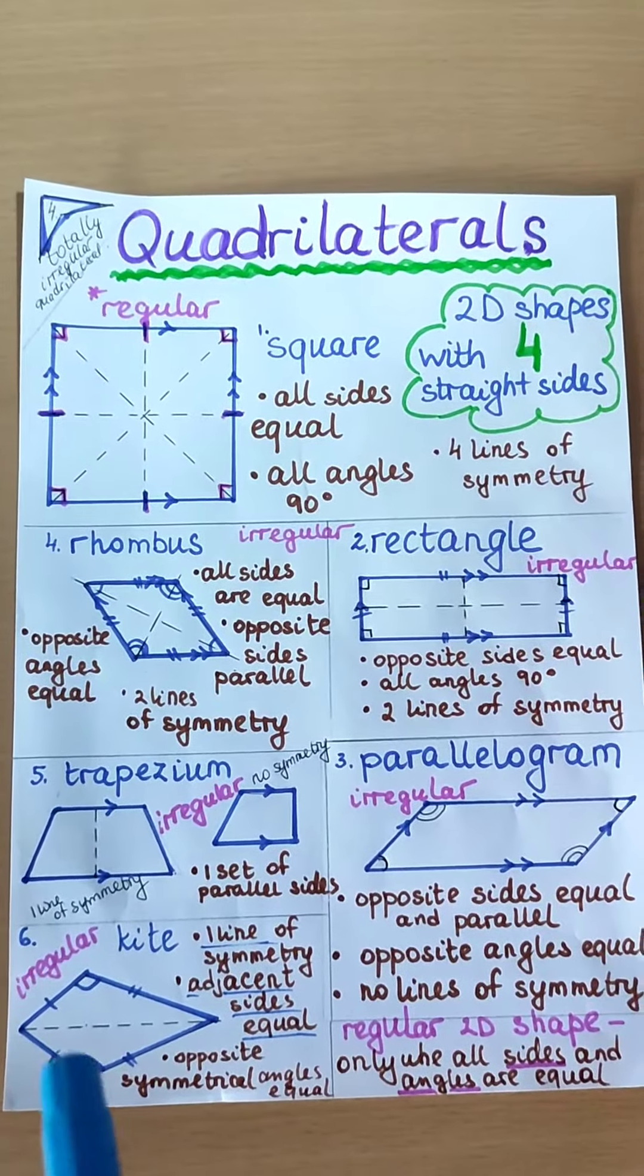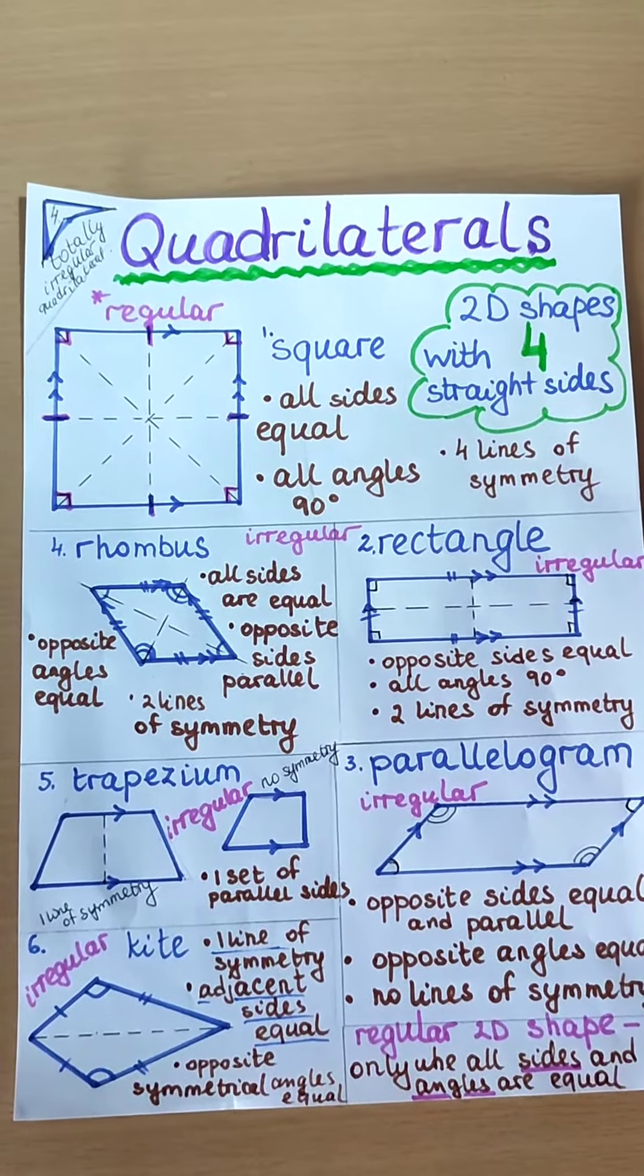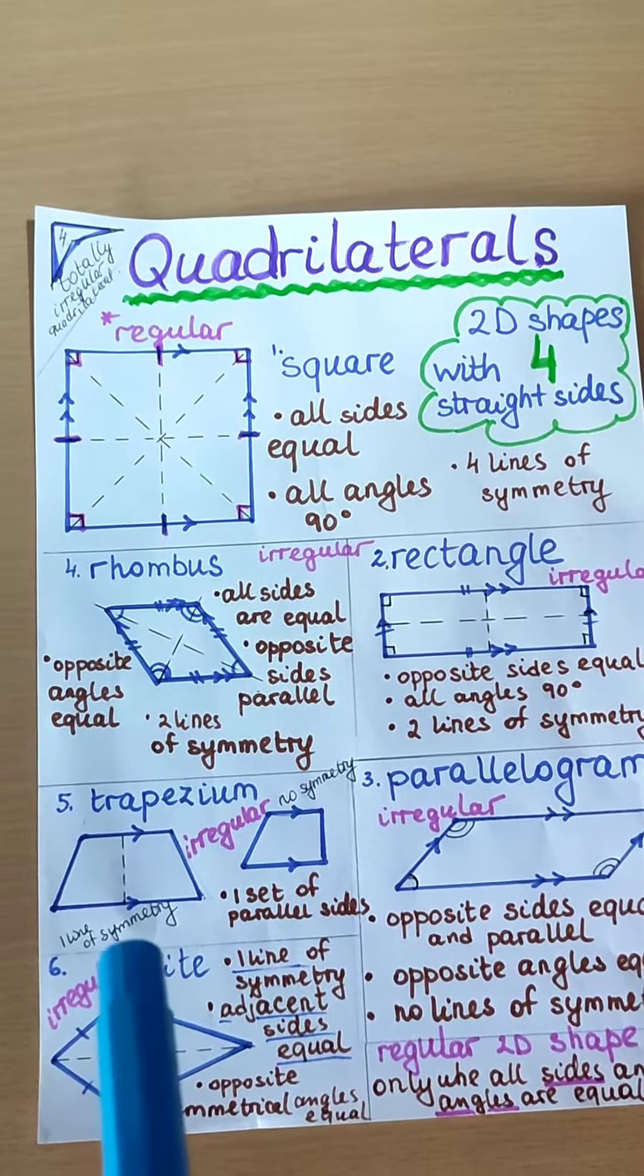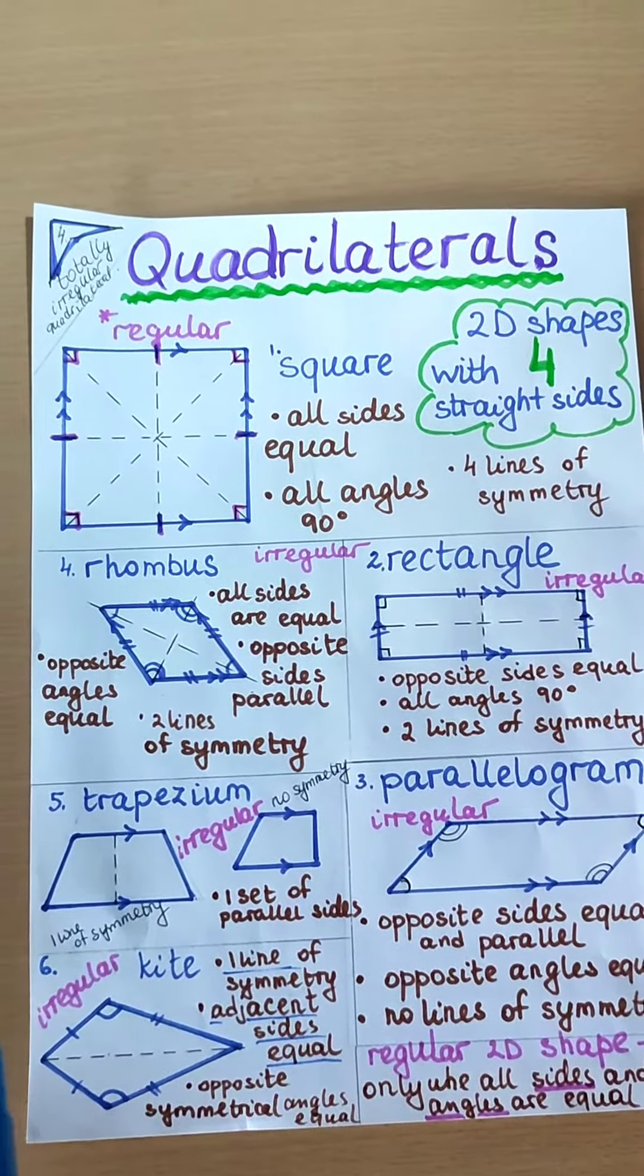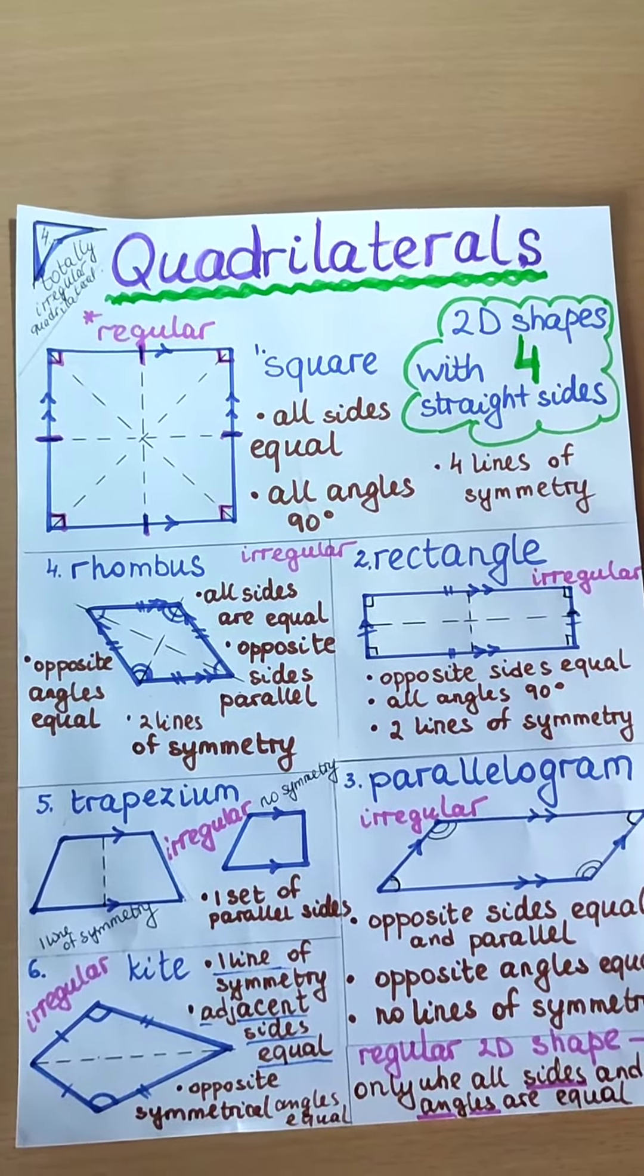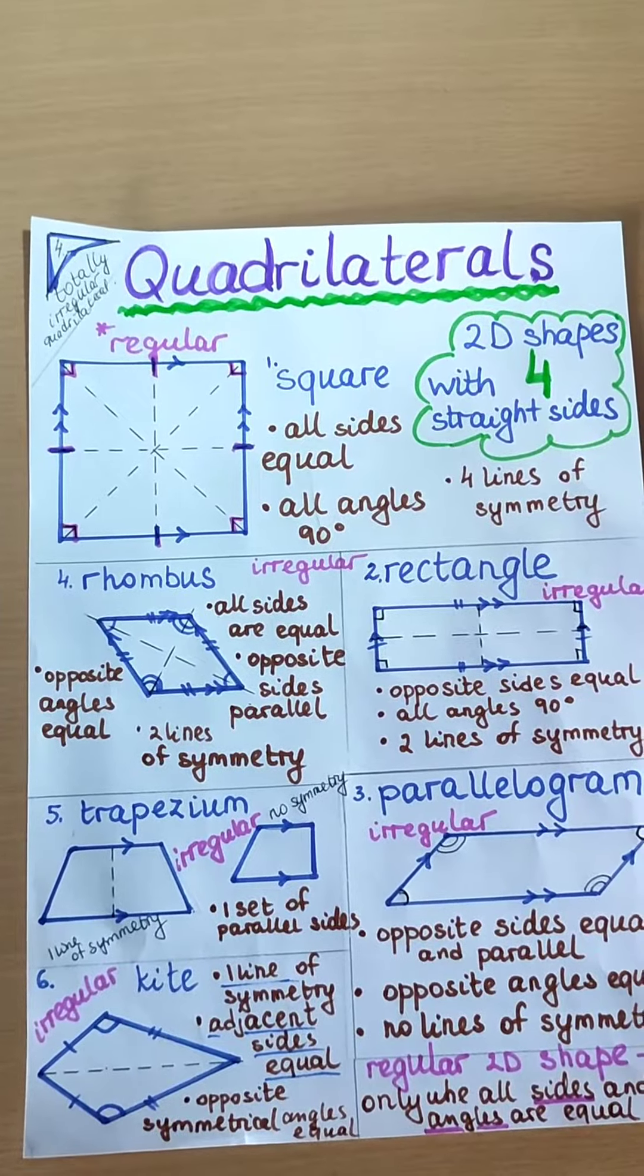This is a kite. A kite has 1 line of symmetry going in the middle, 2 sides which are the same, adjacent sides. Can you see? 2 pairs of sides which are the same. And these opposite angles are the same as well. I'll see you next time.